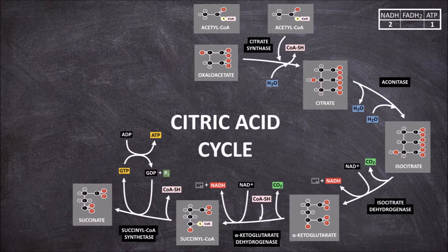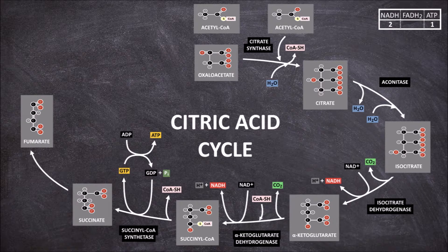The sixth step involves the oxidation of succinate into fumarate using the enzyme succinate dehydrogenase. This step involves the reduction of FAD into FADH2, taking our net total so far for one acetyl-CoA molecule to two NADH, one FADH2, and one ATP.